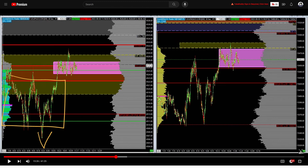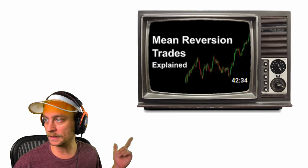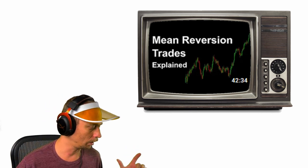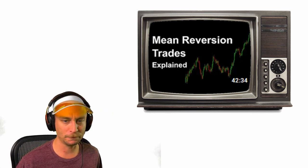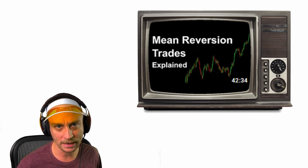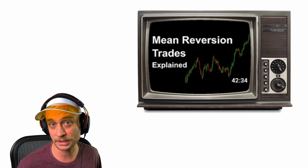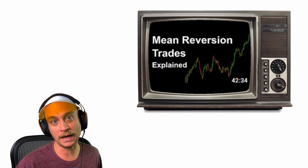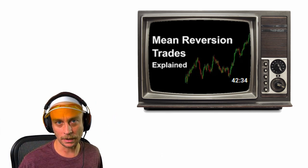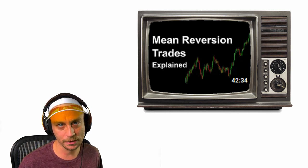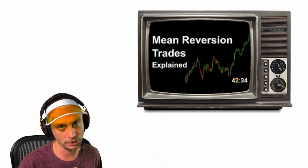This is about a three-hour range. The longer a range goes on — I talk about this in a video — the harder the push will be coming out. A five-minute range isn't great, but something that's been going on for five days could run the whole next day. That's how you can find straight-up trend days.